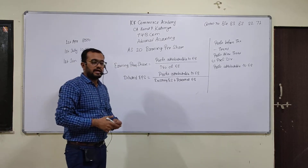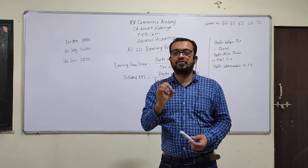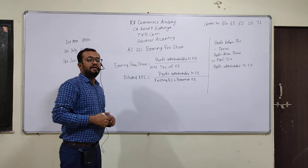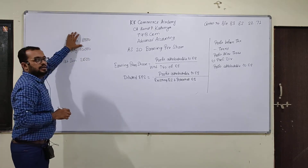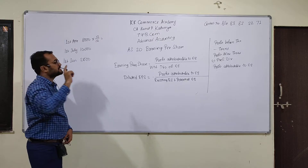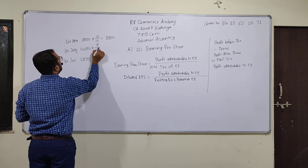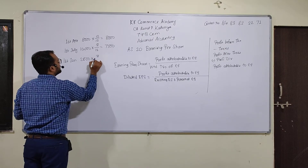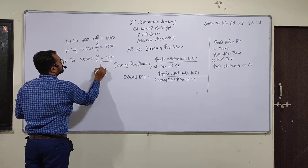Now, at the end of the year, what would the number of shares be? Simply adding them is not correct. For the purpose of calculating EPS, I want the weighted number of shares. Weighted means accounting for the time period each batch of shares was outstanding. For example, shares issued from 1st April were held for 9 months — so 9 upon 12, giving 7,500 weighted shares. Then shares from 1st January were held for 3 months — giving 500 weighted shares. So the total weighted average is 8,000 shares.